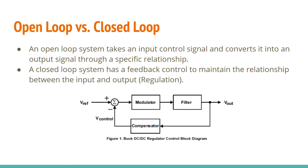A system can either function in an open loop or closed loop configuration. An open loop system transforms an input control signal into an output through a specific relationship. The open loop based on this block diagram is the modulator and filter. This is known as the power stage of a buck converter. It consists of the pulse generator and passive filter, and this is what's in charge of stepping down the input voltage.